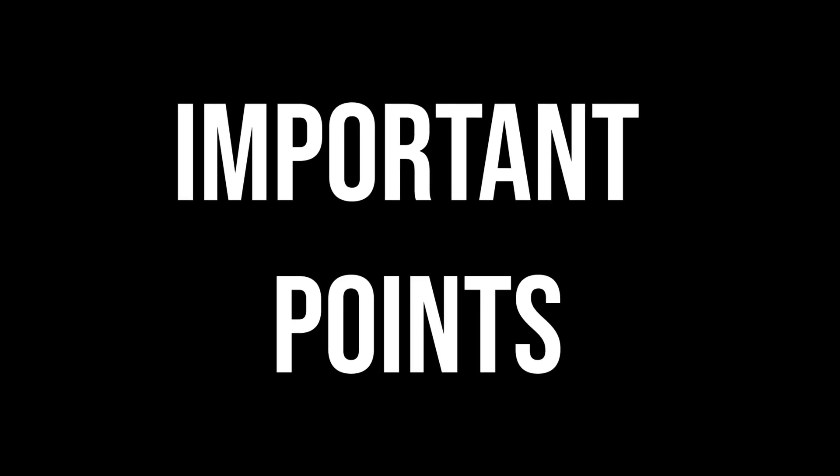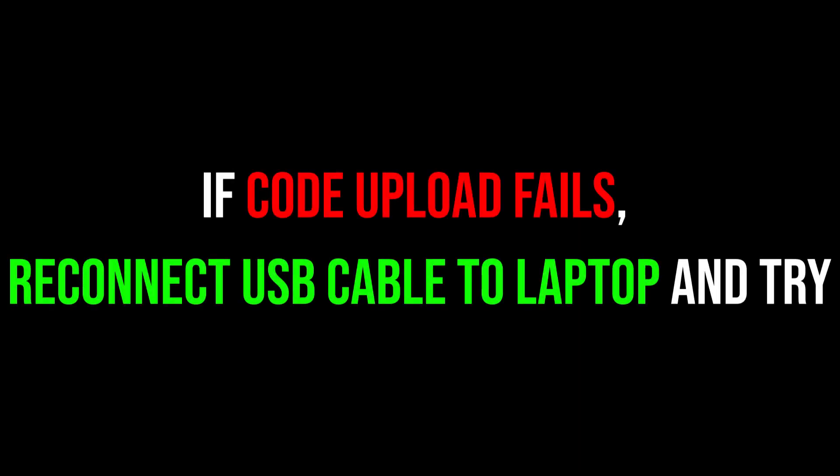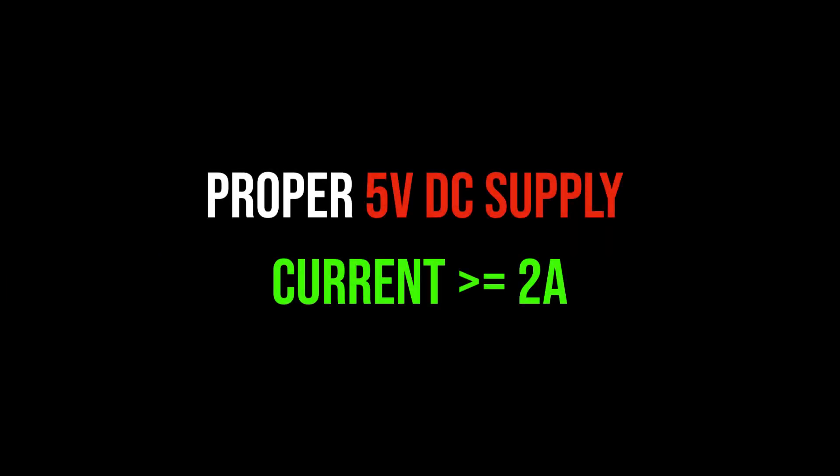There are a few points to remember while making this ESP32 cam project. First, we need to set WS Max Cued Messages to 1, otherwise the video will be very slow. Second, if the video is not displayed on the app, reconnect the Wi-Fi on the mobile and try again. Do not connect the IO16 pin of the ESP32 cam — it is used internally by PS RAM. If uploading of code fails, try after reconnecting the USB cable to the laptop. Make sure to provide a proper 5V DC supply only.